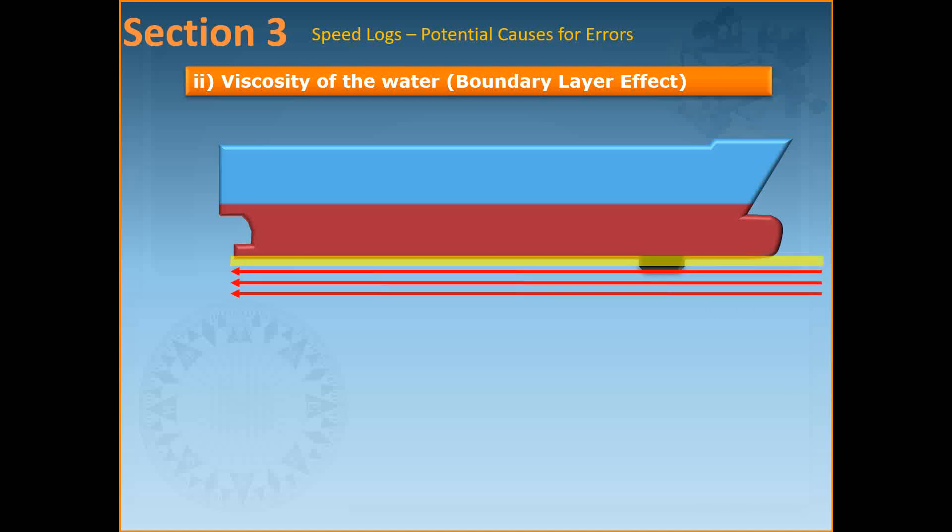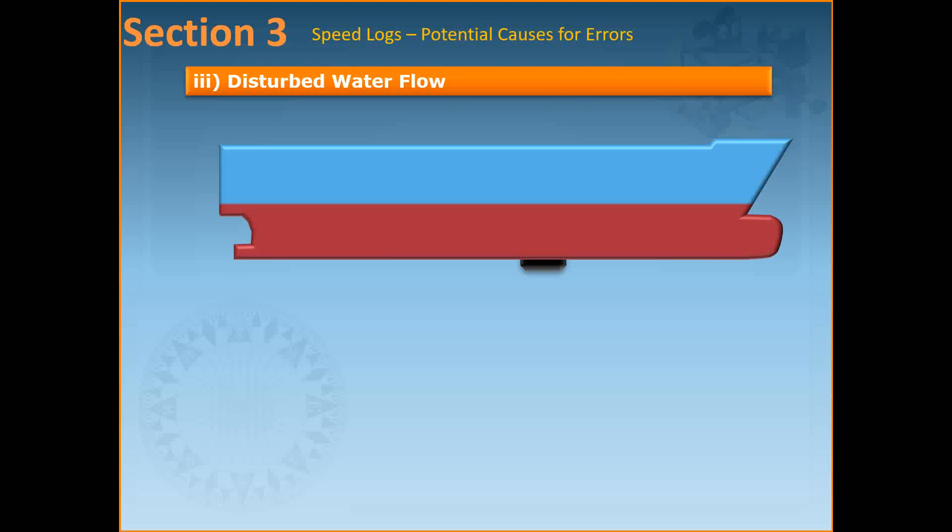The third reason is the disturbed water flow which refers to the water flow that gets disturbed around the appendages of the ships such as bilge keels, anodes and plate edges.